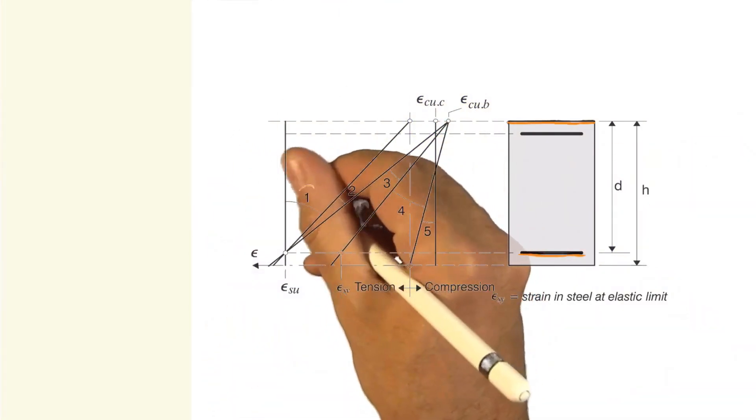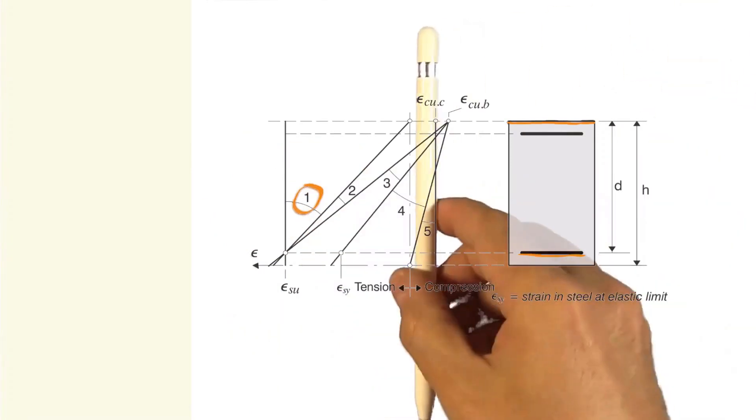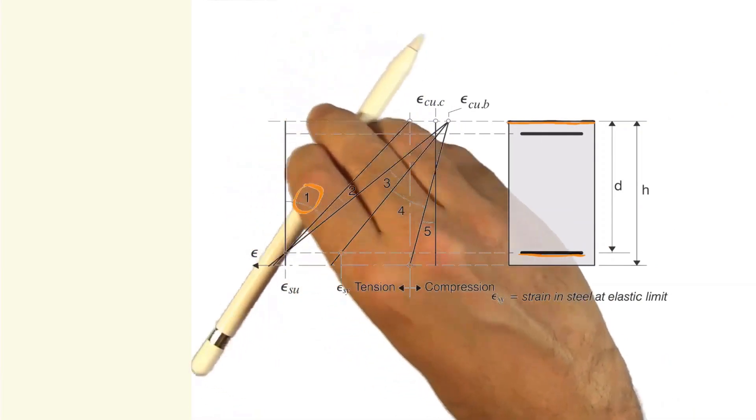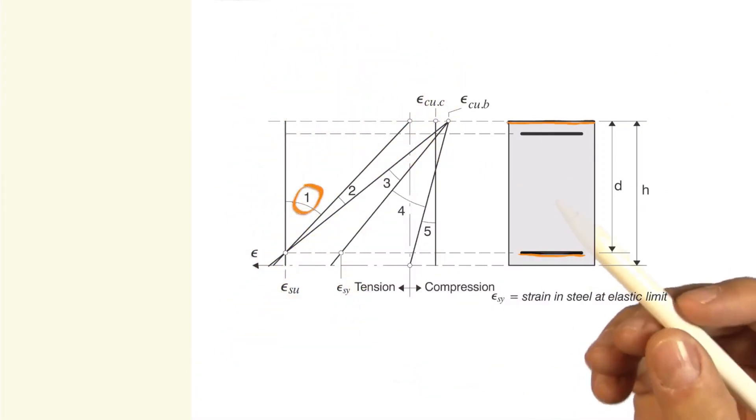In this first domain, our cross-section will be at full axial tension and tensile force, perhaps with a small eccentricity. Our cross-section will break in the case where the reinforcement steel is at its elastic limit,